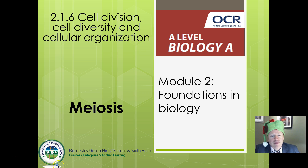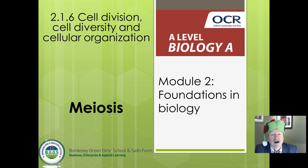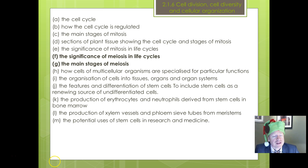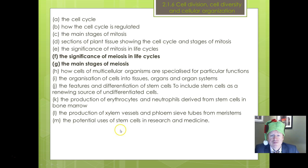So let's talk about meiosis. We've talked about last time about mitosis as an example of cell division. This time we're thinking about meiosis. For the example specification you're looking at sections F and G, the significance of meiosis in a life cycle and the main stages of meiosis.